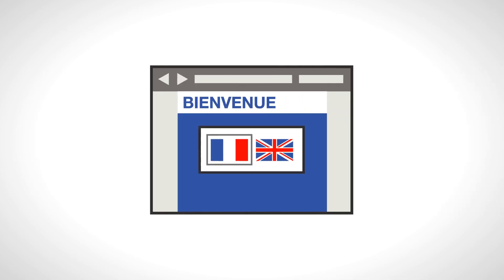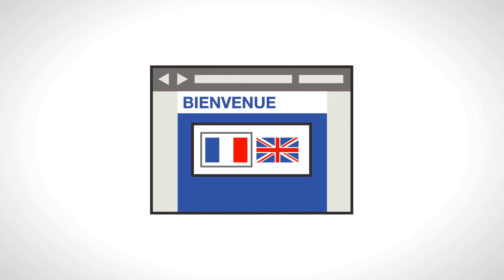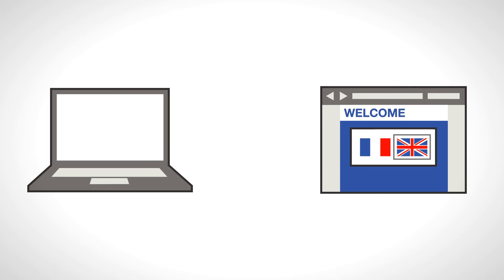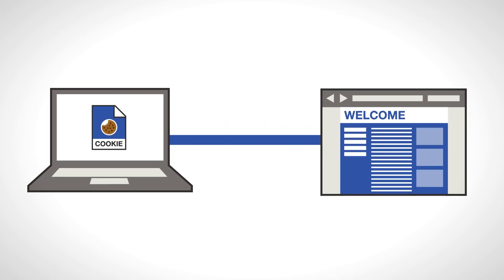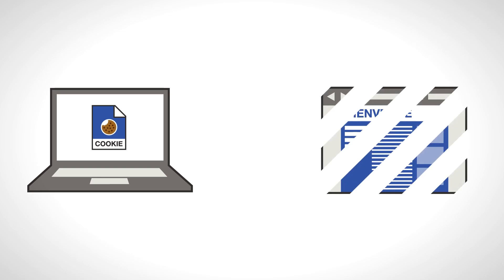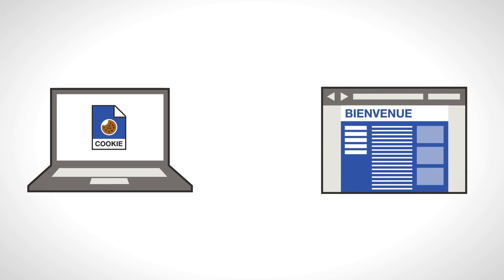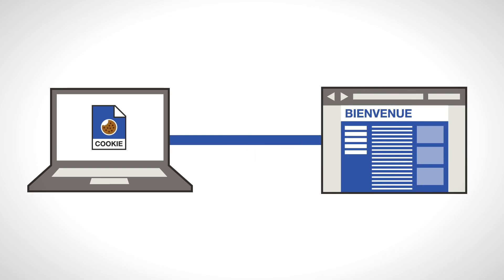For instance, imagine selecting a certain language for a website you'd visit. You'd tell the website, hey, I'd like to view your website in, say, English. The website would then save that information to a little document — a cookie — on your computer. The next time you'd visit that website, it would be able to read the cookie it saved earlier. That way, the website could remember your language and let you view the website in English, without you having to select your language again.